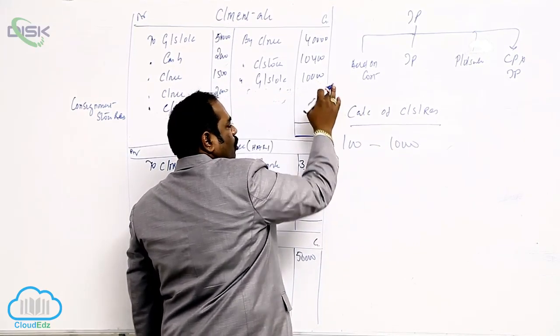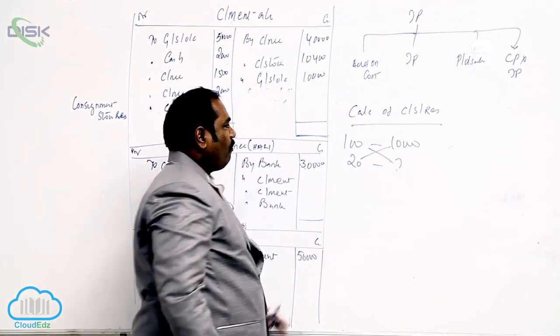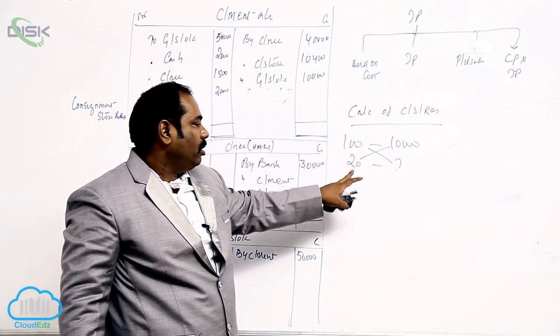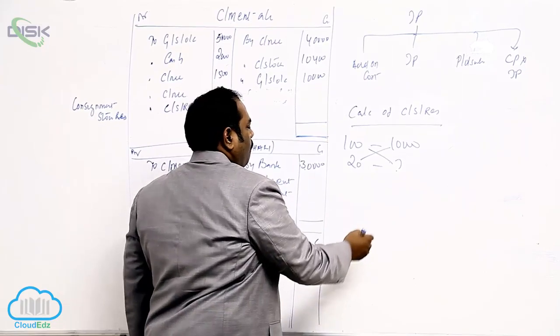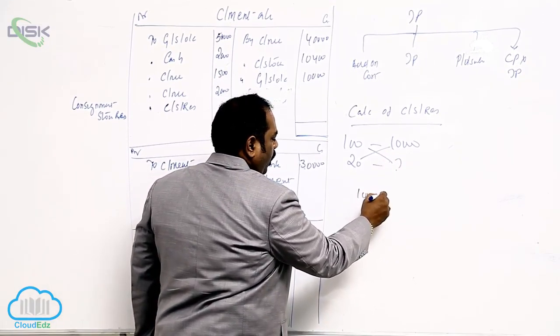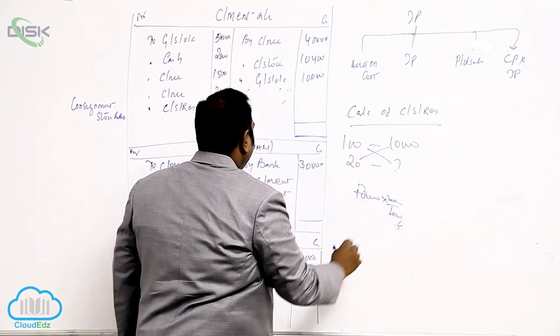What is the unsold stock left? 20. For 20 what is the extra price we are adding? For 100 cases we are adding 10,000. What is the stock left? For 20 cases what is the stock? One fifth of this. 10,000 into 20 by 100. 2,000.